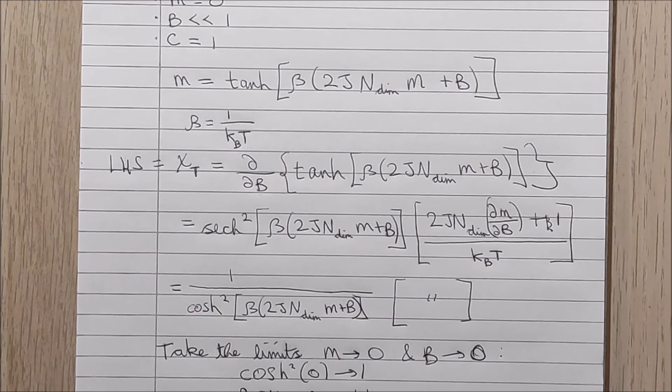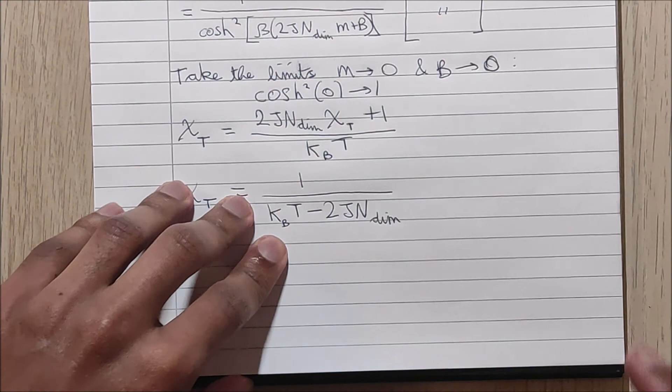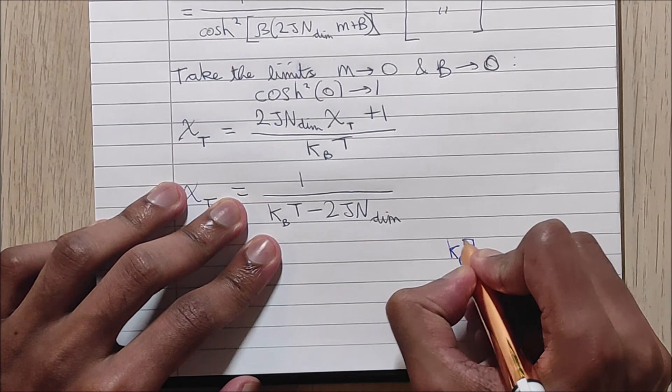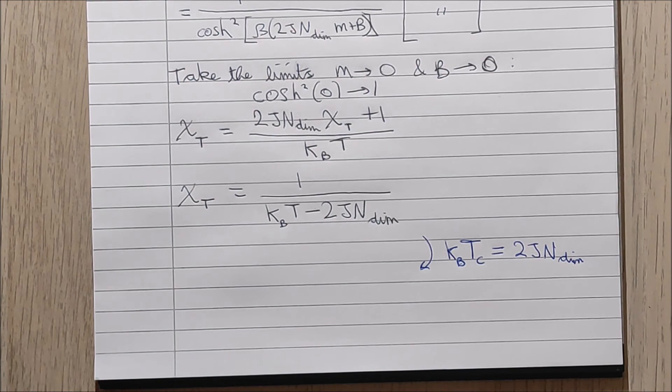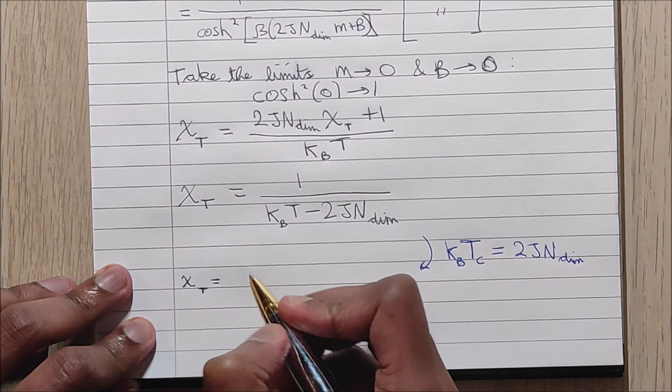And for the final step of this derivation, we will use that from this transcendental equation one can derive that the critical temperature multiplied by the Boltzmann constant is actually equal to 2JN_dim, and we can use this here in the final step to gain the following expression.